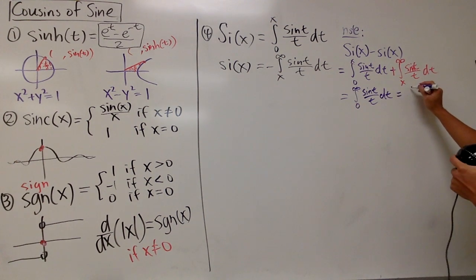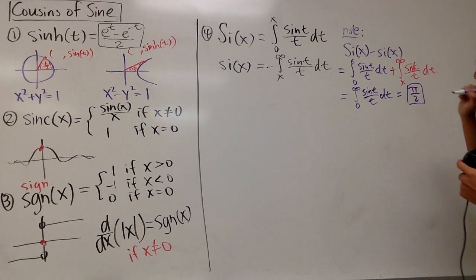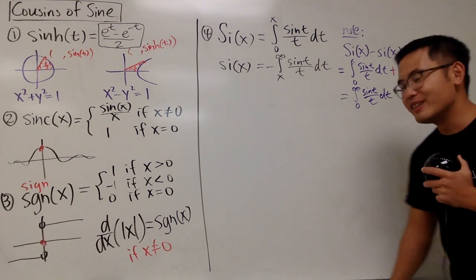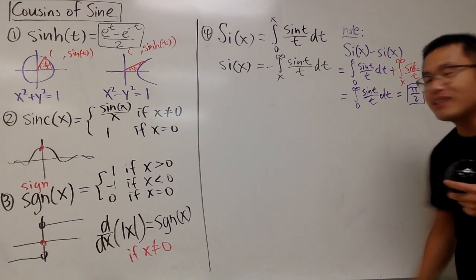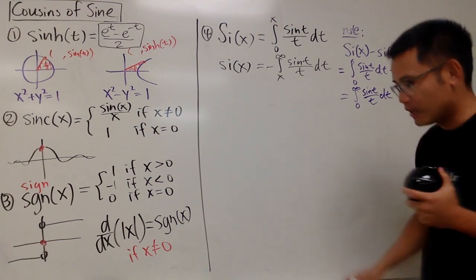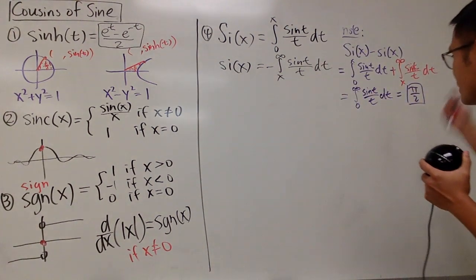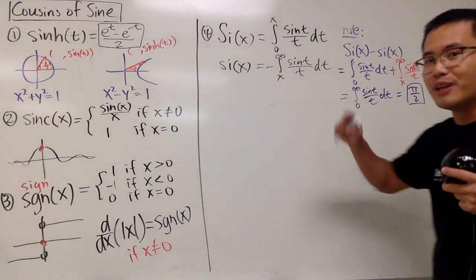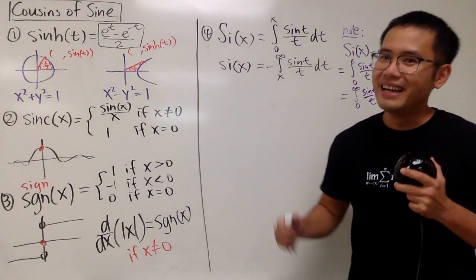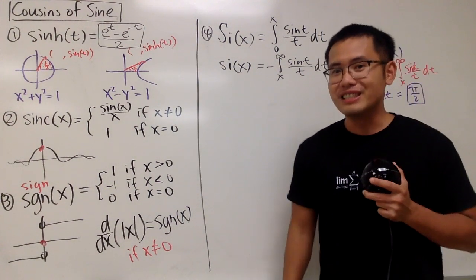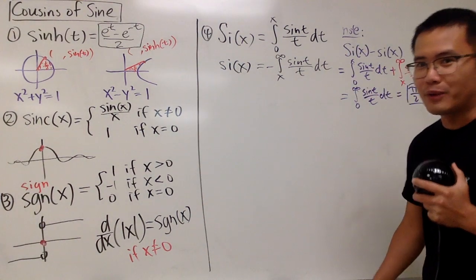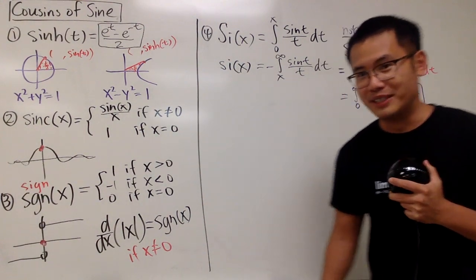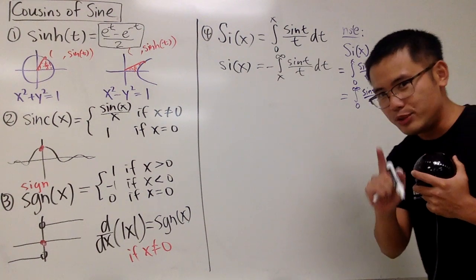And this is nicely equal to pi over 2. Very, very nice. I have a video on this already if you'd like to check it out. If you know this famous value, you can just say, 'oh, that's pi over 2,' and you'll be impressive. Sometimes I just memorize famous numbers to impress my students — that's my secret.